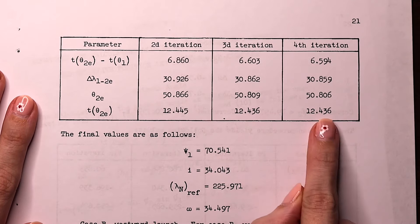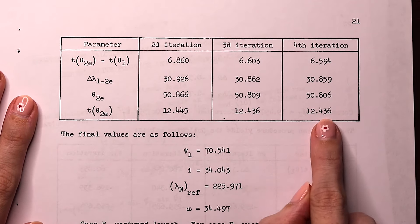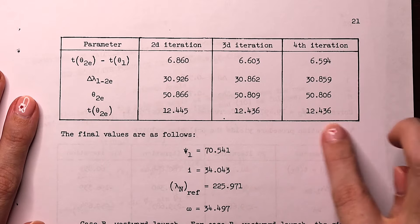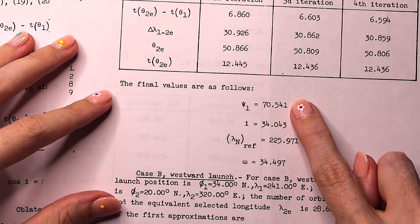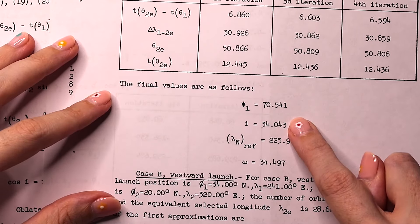Doing that whole process four times gives you this table of iterations. Because we've reached a point where we've got some kind of convergence to a value here, we can take these values and use them with our last two equations to work out the azimuth angle and the inclination angle.